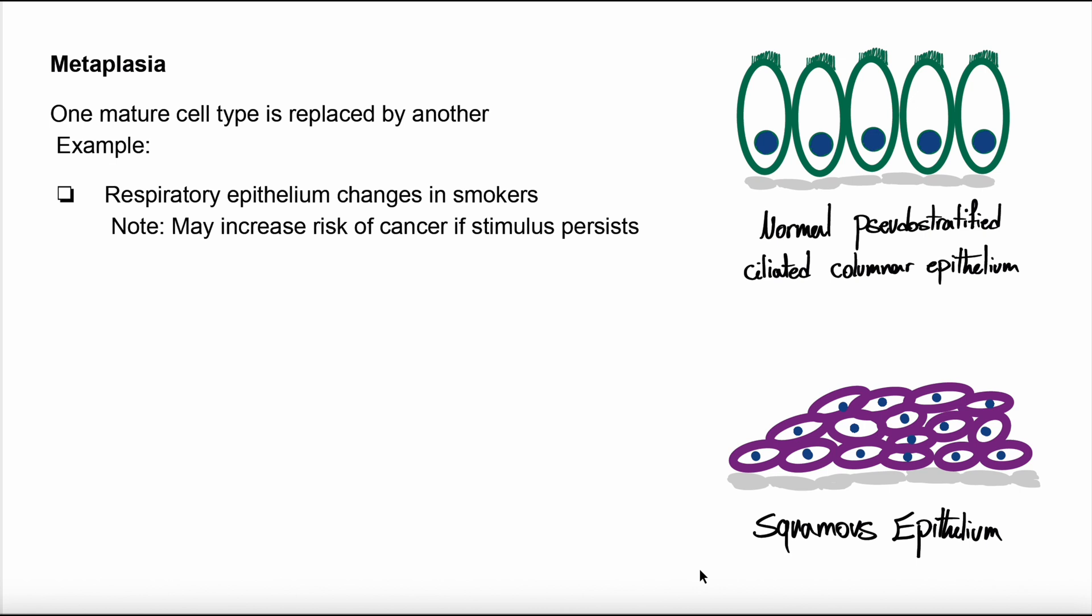Metaplasia is reversible cell type change. What does it mean? It's a reprogramming of stem cells. It leads to a substitution of one mature cell type with another that is more resistant to chronic stress. Metaplasia is not a normal physiological process and can progress to cancer if the stimulus persists. In adults, metaplasia occurs only within the tissues of epithelial and mesenchymal origin.